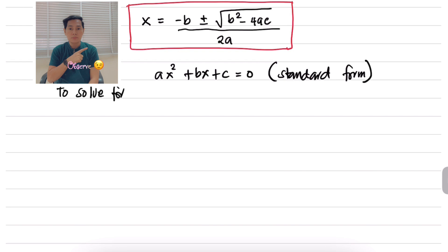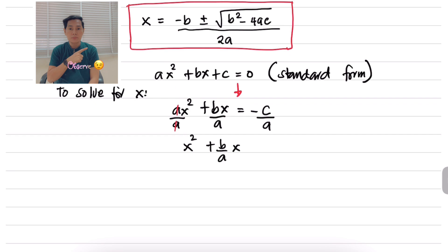Then to solve for x, we are going to transpose or transfer c to the other side. So the equation becomes ax squared plus bx is equal to minus c, then divide both sides by a. So we have x squared plus b over a times x is equal to negative c over a.